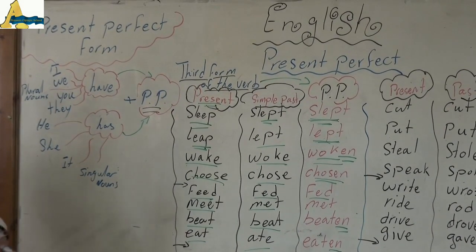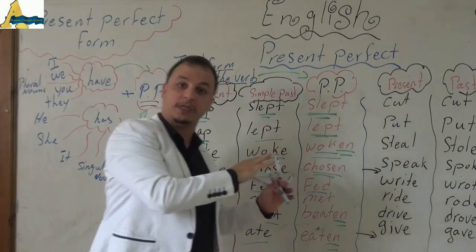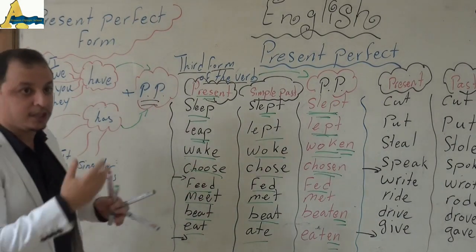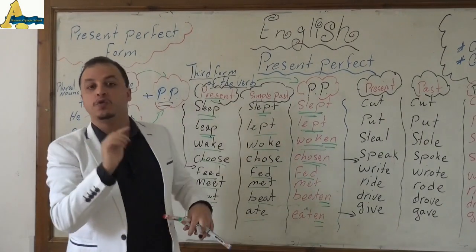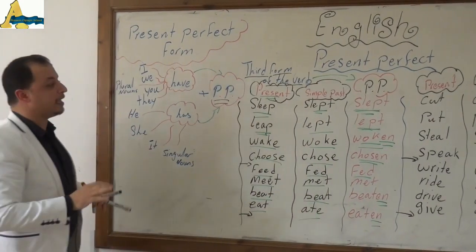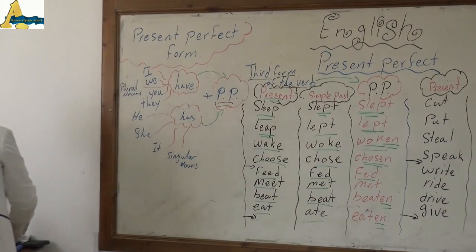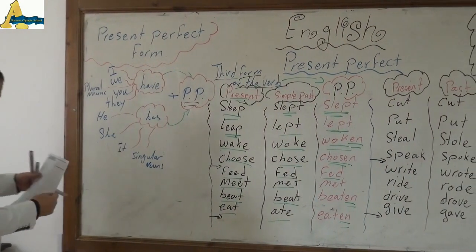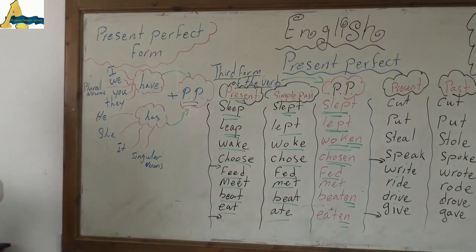There is no rule to understand the third form of the verb — there is only one way: to memorize it. This is a good way I have found online — there is a video that can help you memorize these forms. Let's start to save them in a really good way.